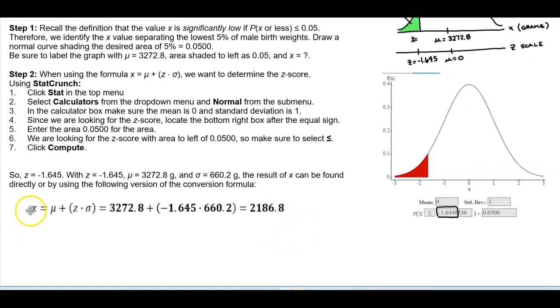So plugging into the formula, X which is equal to the mean which is 3272.8 plus the quantity of the Z score which is negative 1.645 times 660.2. Following the order of operations, we get 2,186.8. So that means over here for the value of X we get 2,186.8.